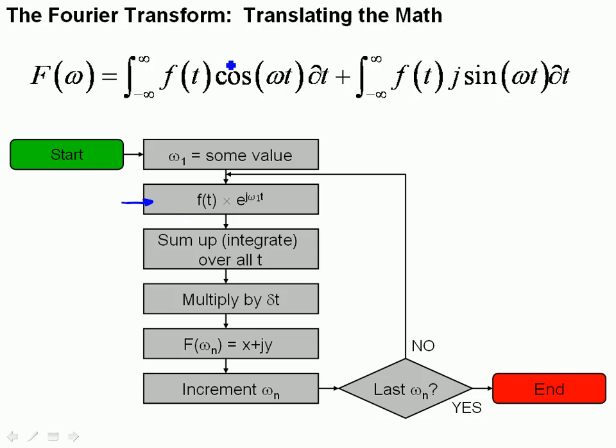The next part of my equation says for both the real cosine term and the imaginary sine term, I need to sum those up over all time, because this is a definite integral from minus infinity to infinity, and integrals mean we sum everything up, and so we find the area under the curve for all t.